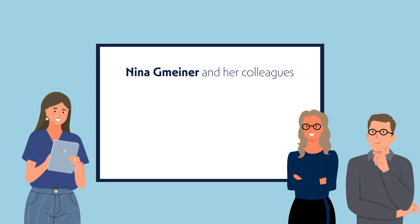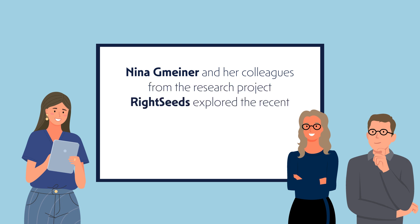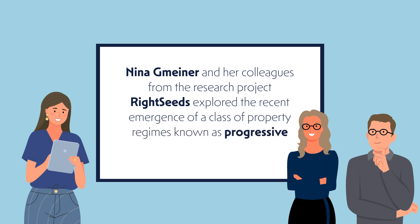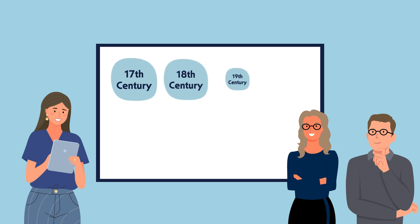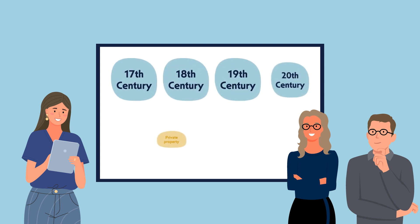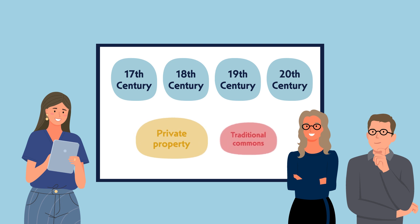Nina Gemeiner and her colleagues from the research project Right Seeds explored the recent emergence of a class of property regimes known as progressive commons. In their paper, the researchers first highlight the link between historical periods and different types of property regimes.